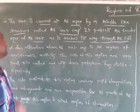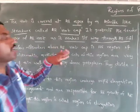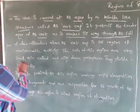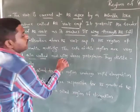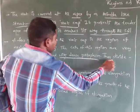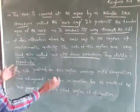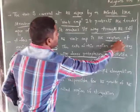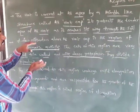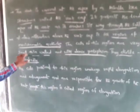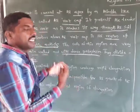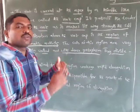A few millimeters above the root cap is the region of meristematic activity. The cells of this region are very small, thin-walled, with dense protoplasm, and they divide repeatedly. That is why the length of the root is increasing.